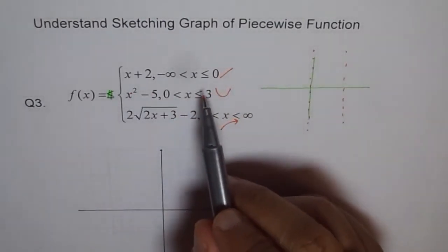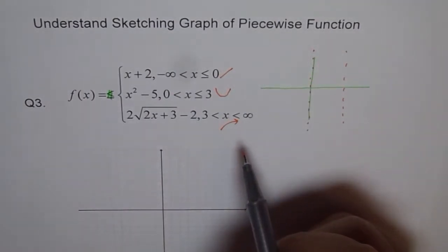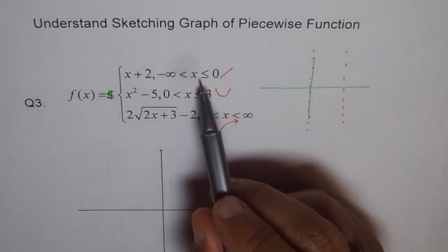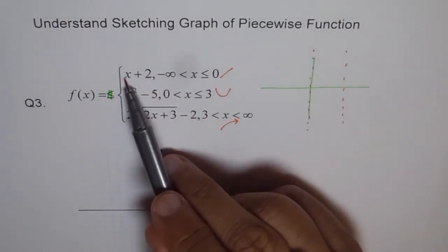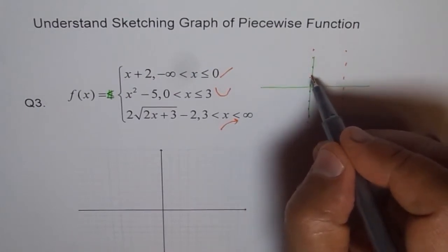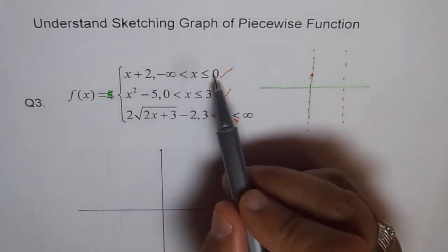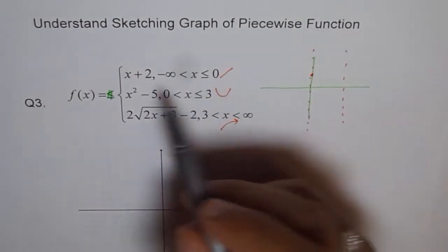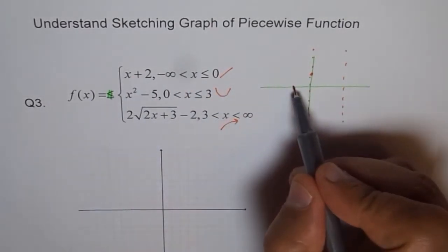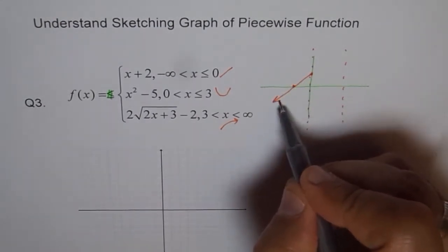Let's start with the first linear function, which covers the left half of our coordinate system. At x equals 0, we get the value 2, so we are at the point (0, 2) — just making a rough sketch. Then we move to the left side and put x equals minus 2, which gives us the x-intercept. At x equals minus 2: minus 2 plus 2 is 0. So we get the point (−2, 0) and draw a line through these two points.